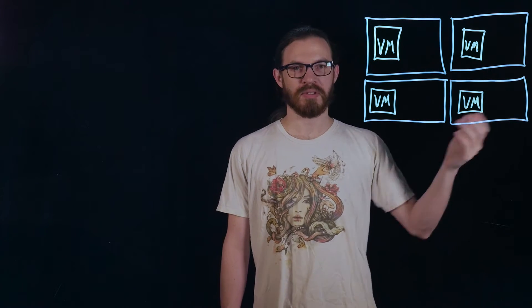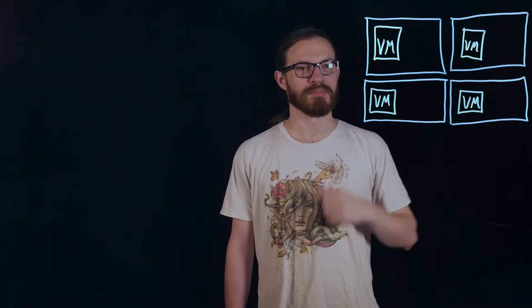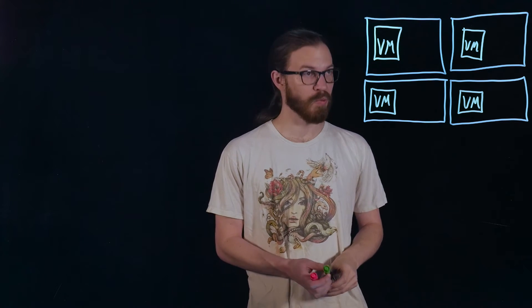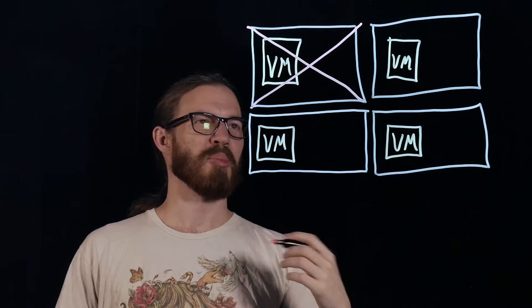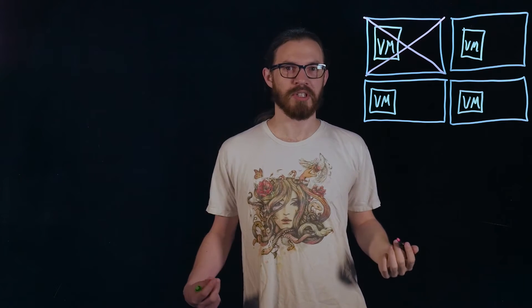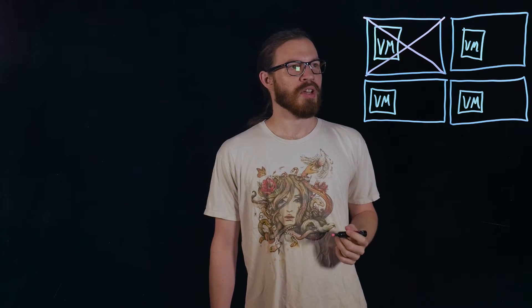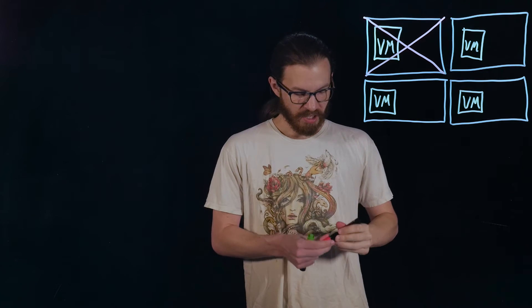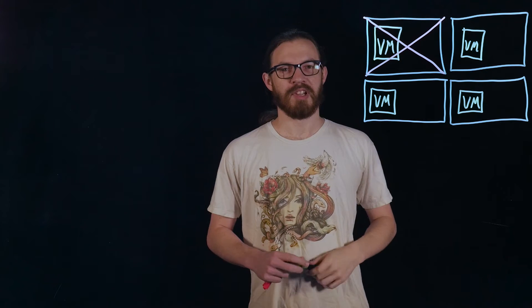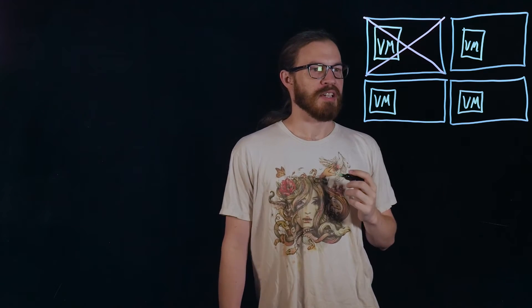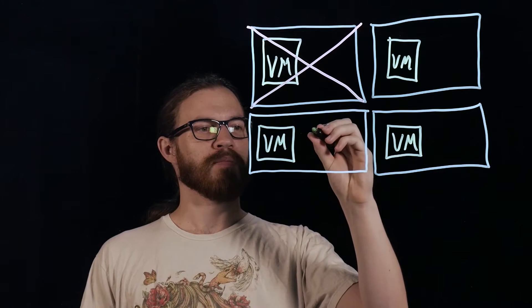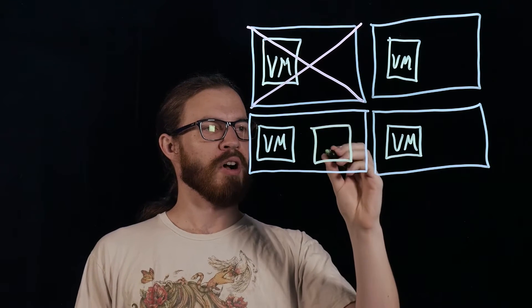So here we have a typical cluster. We've got four hosts, each with some VMs on them. VM high availability, or HA, means that when we lose one node — it becomes disconnected, either due to power outage or hardware failure, anything similar to that — we want this VM to still be accessible. If your cluster supports high availability, or HA, when we run into a scenario like this, we can take this VM and power it on on any of the other hosts.